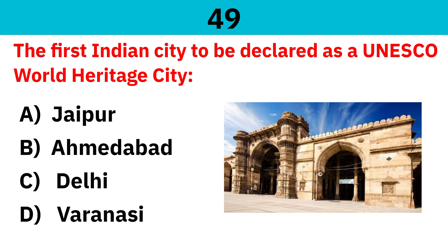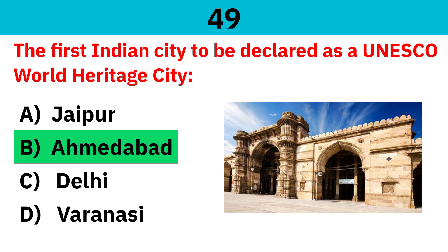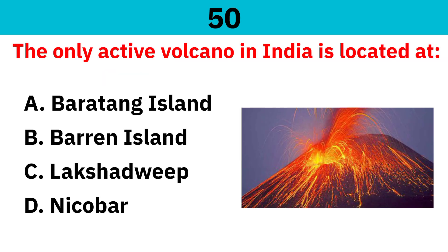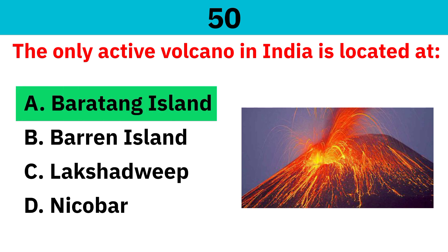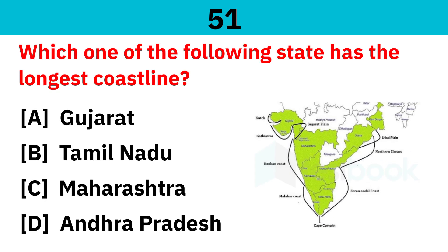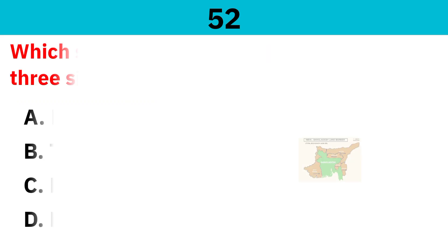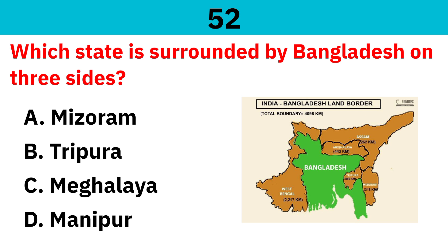The first Indian city to be declared as a UNESCO World Heritage City. Correct answer is Ahmedabad. The only active volcano in India is located at Barren Island. Which one of the following states has the longest coastline? Correct answer is Gujarat. Which state is surrounded by Bangladesh on three sides? Correct answer is Tripura.